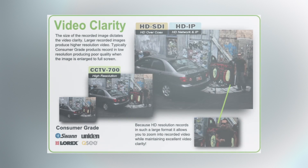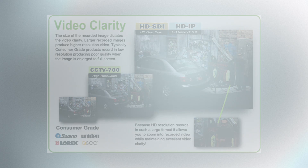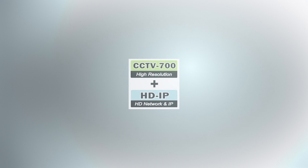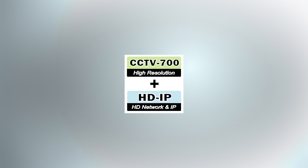IP camera systems allow for a camera to be installed anywhere there is a network connection. This is extremely useful for companies that have multiple or remote locations but want to manage the security and surveillance of all locations with one system. A hybrid system takes the CCTV technology and the IP technology and combines them into one operating system.